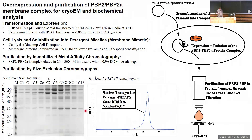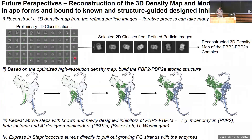We use recombinant expression techniques in E. coli to produce the complex. We then lyse the cells and isolate membrane protein fractions using a detergent called DDM, purify the complex using affinity chromatography, do a dialysis step to remove harsh reagents, and then do a final size exclusion chromatography step to clean up our sample for cryo-EM. In cryo-EM, we flash-freeze the sample using liquid ethane onto grids for imaging on cryo-transmission electron microscopes, yielding 2D refined particle images that we can average and reconstruct into a 3D density map of the complex.